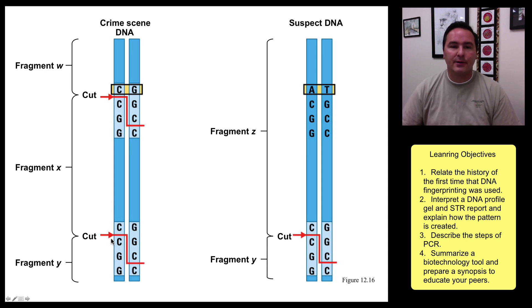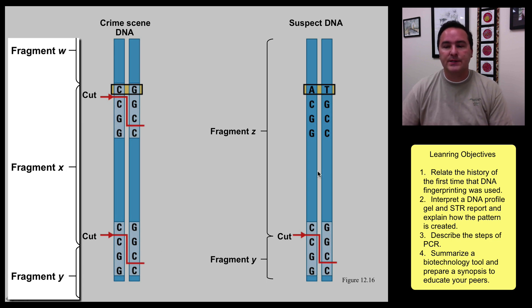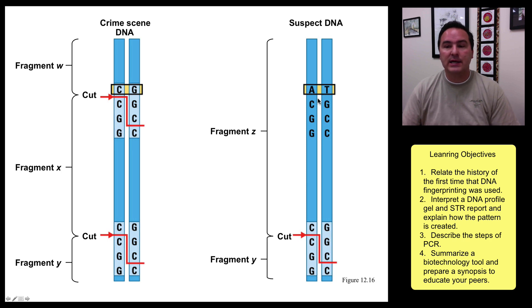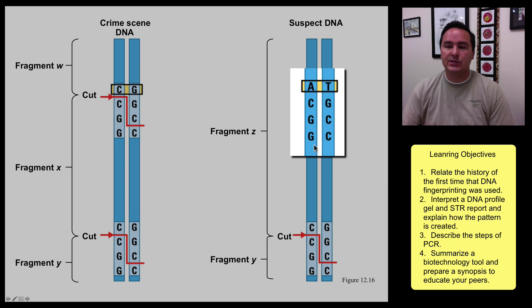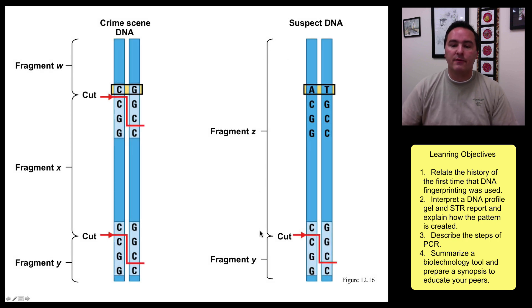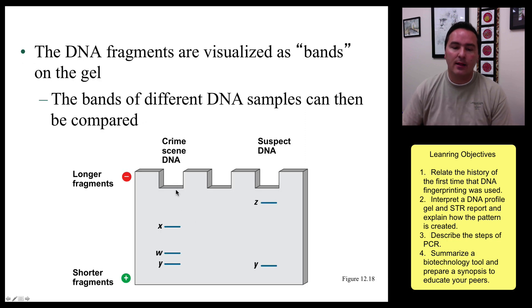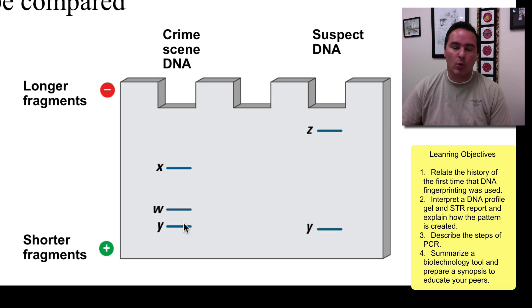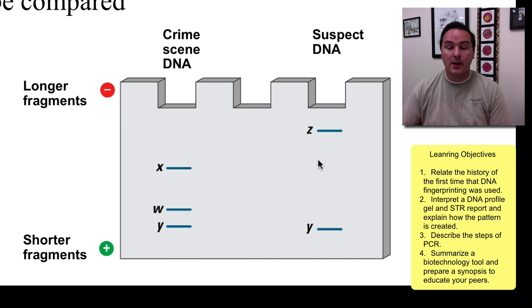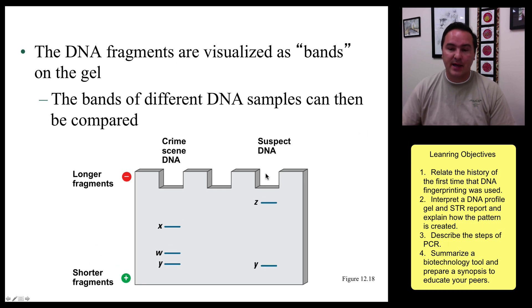The restriction enzyme finds two occurrences of the CCGG pattern in the crime scene DNA and cuts that long piece into three fragments: W, X, and Y. In the suspect's DNA, at one position the sequence is ACGG instead of CCGG, so the restriction enzyme does not cut there. This results in one large fragment Z and fragment Y, which is the same length as fragment Y from the crime scene. When run on a gel, the crime scene gives three fragments X, W, and Y — Y traveled the farthest because it was shortest, X traveled least because it was longest. The suspect shows fragment Z and Y, where Z traveled the least because it was essentially the combined length of X and W. This is evidence that the suspect's DNA does not match the crime scene DNA. This method is called restriction fragment length polymorphism, or RFLP.